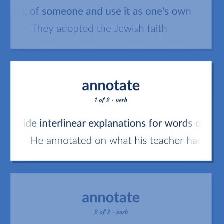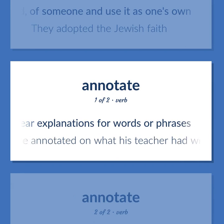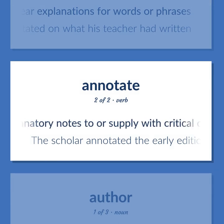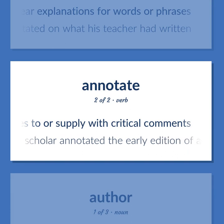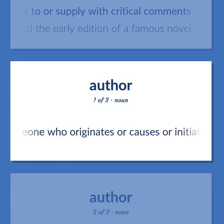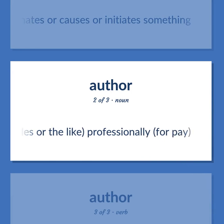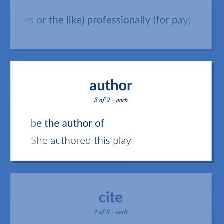Annotate: Provide interlinear explanations for words or phrases. Add explanatory notes to or supply with critical comments. The scholar annotated the early edition of a famous novel. Author: Someone who originates or causes or initiates something. Writes books or stories or articles and the like, professionally, for pay. Be the author of. She authored this play.